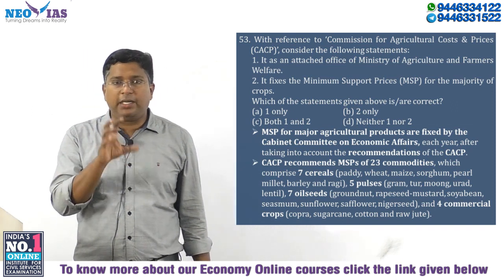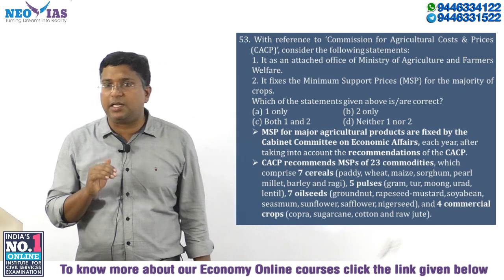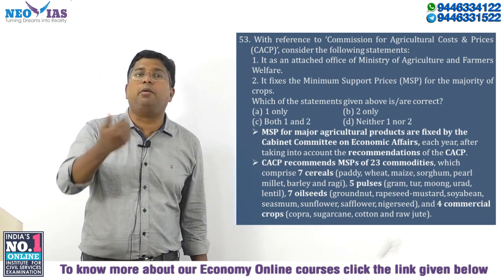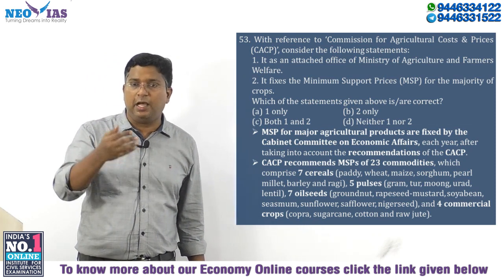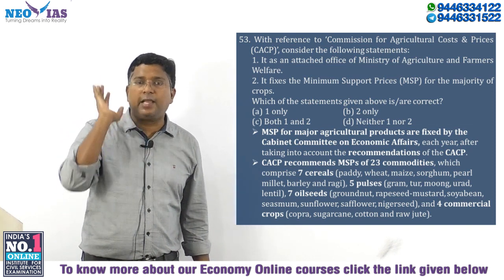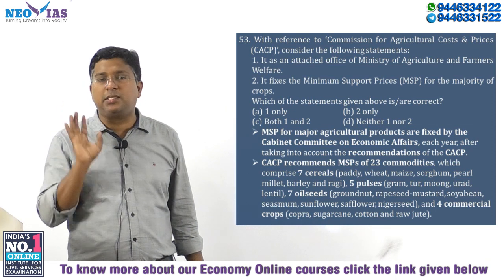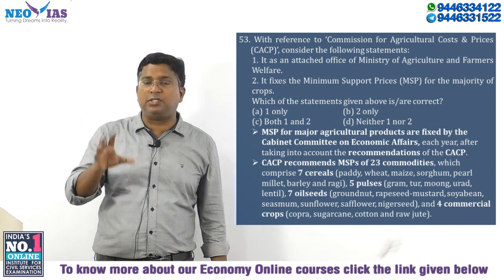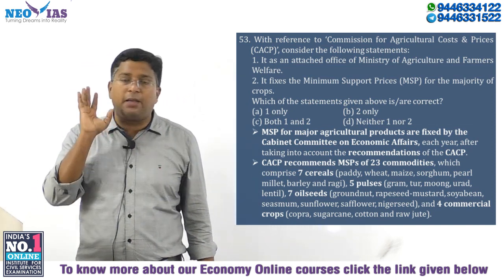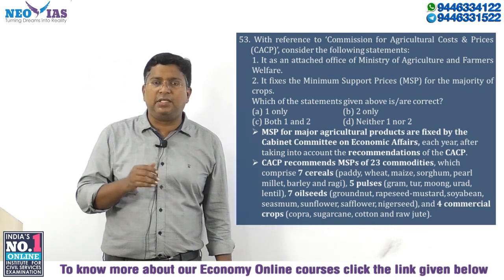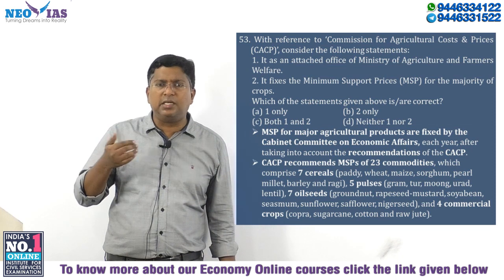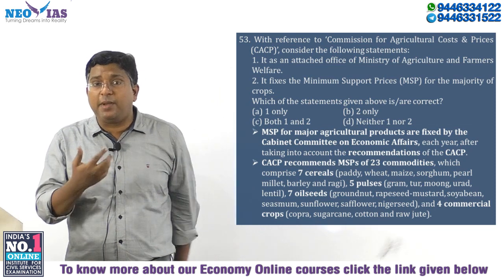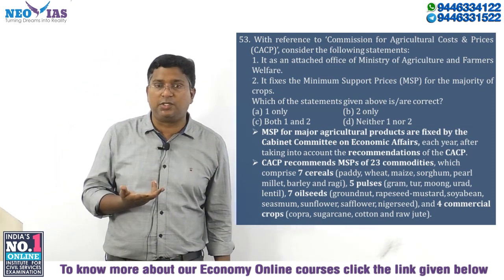CACP is an attached office under the Ministry of Agriculture and Farmers Welfare. It gives recommendations to the government — currently for 23 crops. For sugarcane, the price is called by a different name, but for all 23 crops, CACP recommends the MSP. After Budget 2018-19, the government decided MSP should be 1.5 times the cost of production.